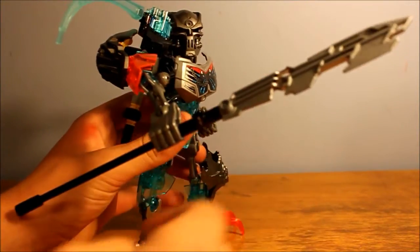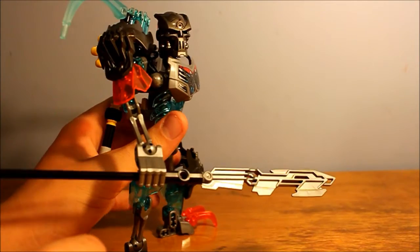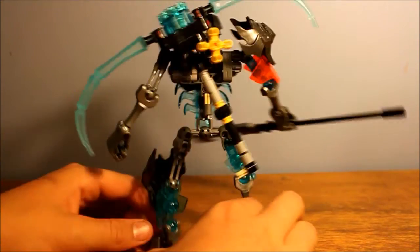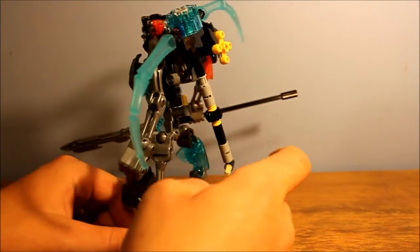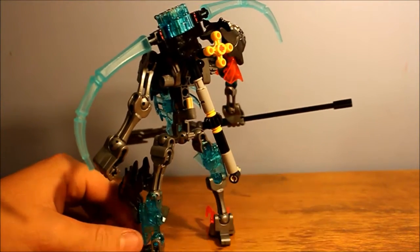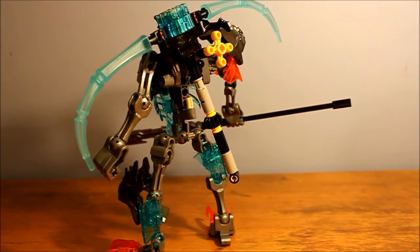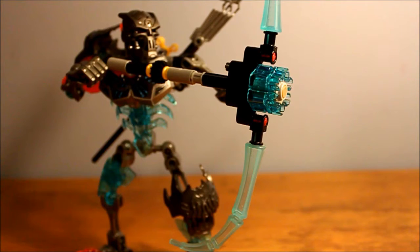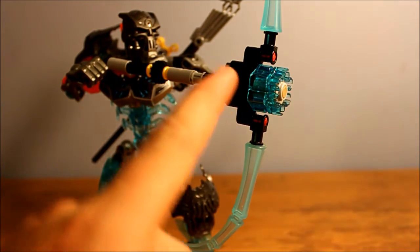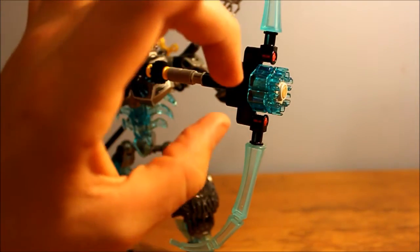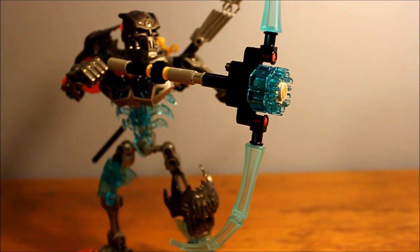Now, he actually comes with two weapons. This blade that he's wielding right now. And this bow, which is actually a six-stud shooter, which I'll get into in a minute. So here's Skull Warrior wielding his bow. And it looks actually pretty good with him. You can see the handle and all that and the bow itself where the string would go.